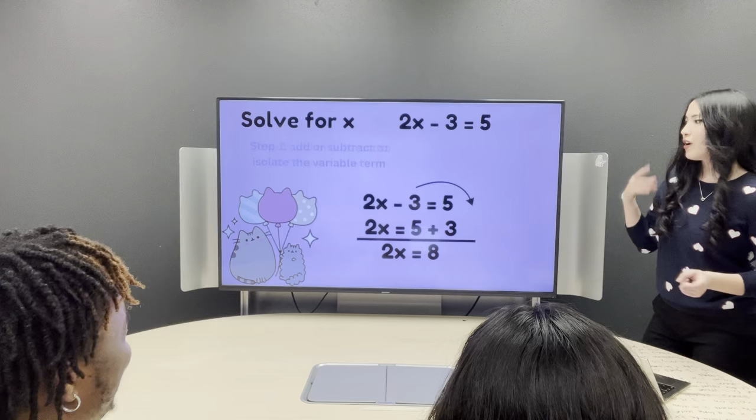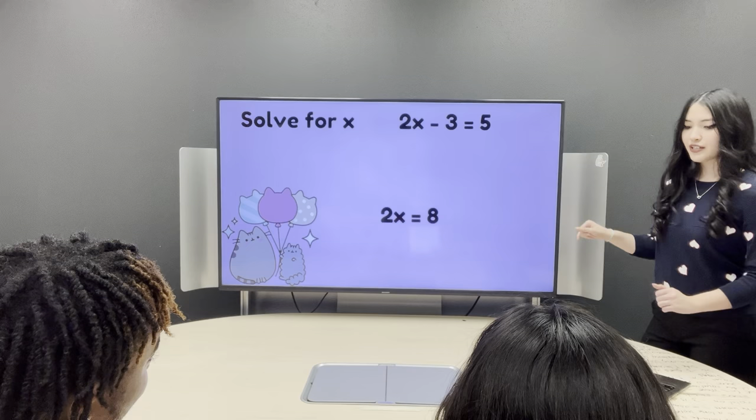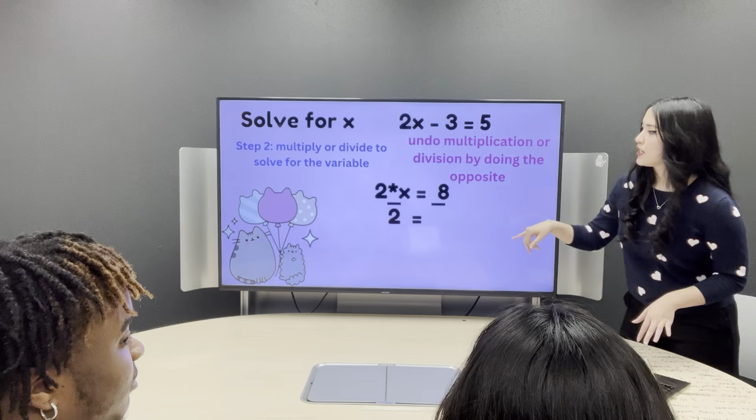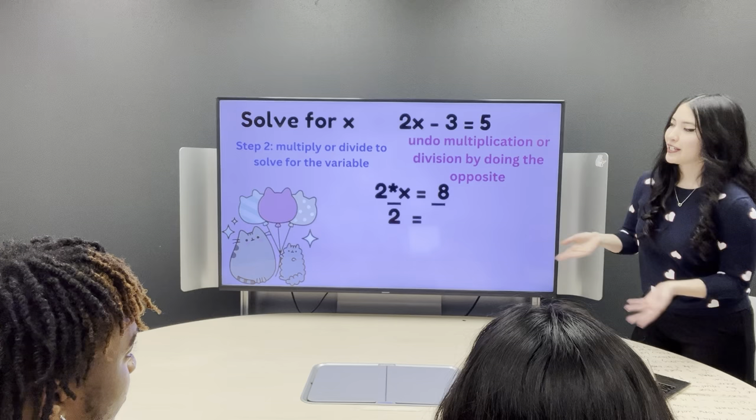So, on to the second step. Multiply or divide to solve for the variable. In this step, we have to undo multiplication or division by doing the opposite. And right here, you can see 2 and x are being multiplied together. That's the 2x is the same thing as saying 2 times x. So, what is the opposite of that?